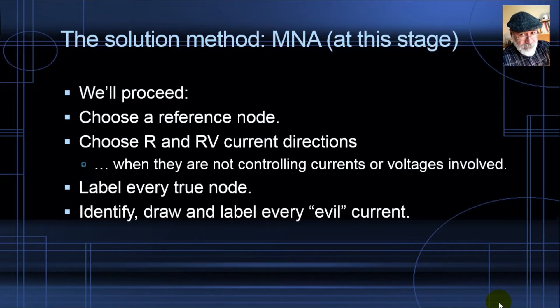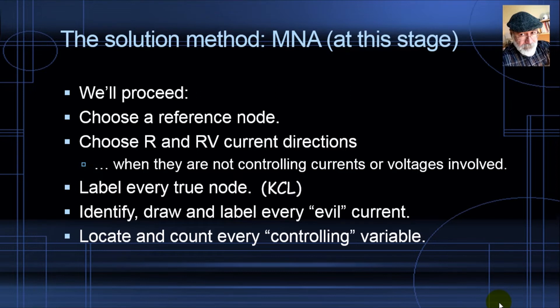Identify, draw and label every evil current. Locate and count every controlling variable. For every true node, we'll have a KCL equation. For every evil branch, we will have an evil, a KVL equation. And for every controlling variable, we will have a CTL, a control equation.